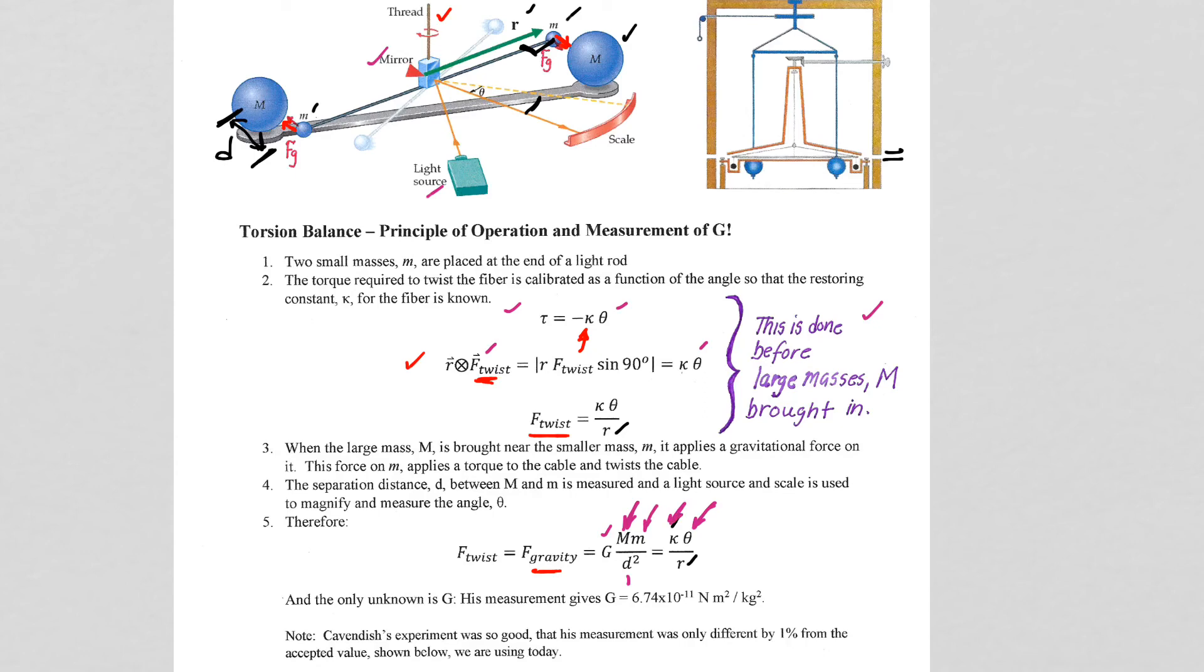He calibrated to get his torsional constant. The r, the distance from the pivot, right, to the r distance here. Right? That is known. Everything is known. And the g value, based on his measurements, corresponds to 6.74 times 10 to the minus 11.